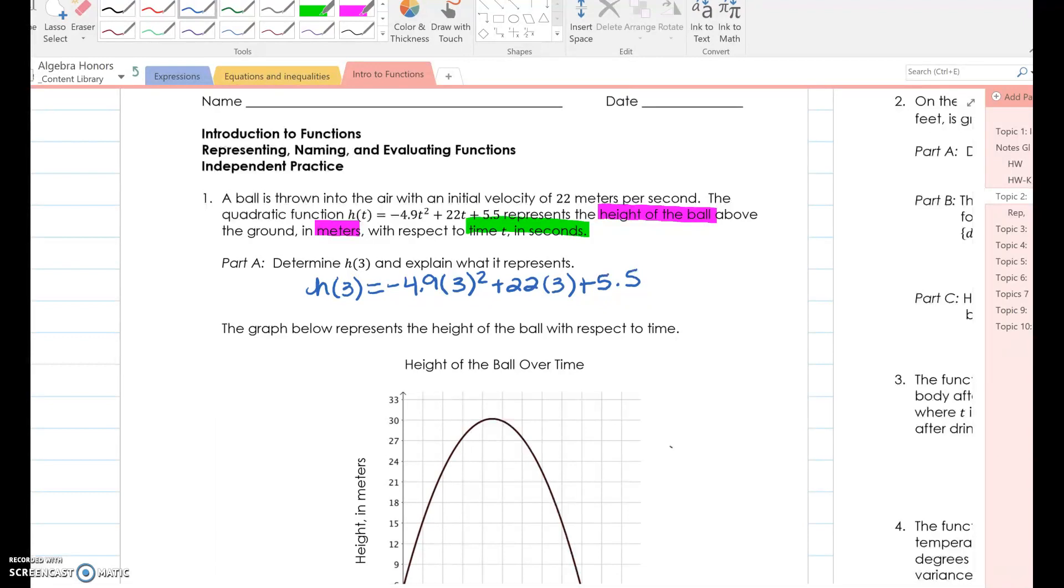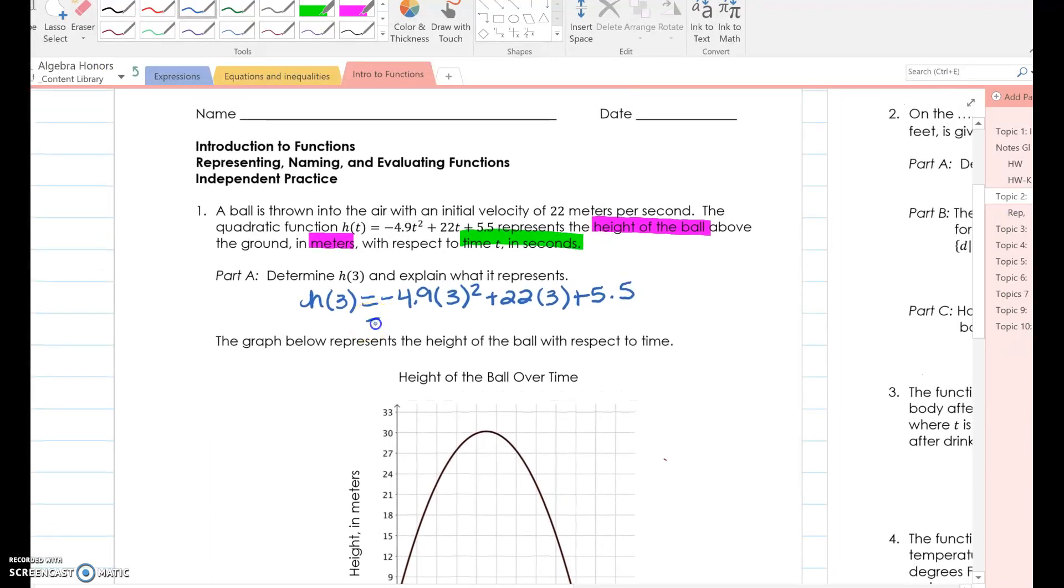And now I need to use my calculator. Alright, so even though we're using our calculator, order of operations will always take precedence. So I'm looking at my function and I notice my parentheses. There's nothing to do inside, but I do have a squared. So I'm going to go ahead and square my 3. So 3 squared is 9. And then I'm going to multiply that by negative 4.9. And that gives me negative 44.1. So now I'm just going to add up my other terms. So 22 times 3, so plus 66. And plus 5.5 gives me a total of 27.4.